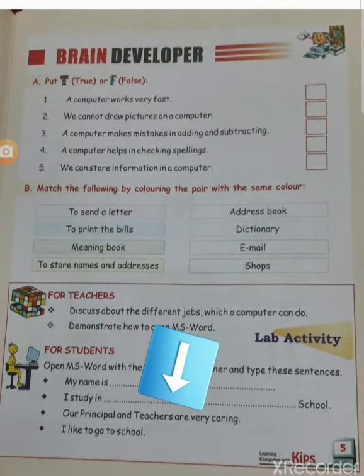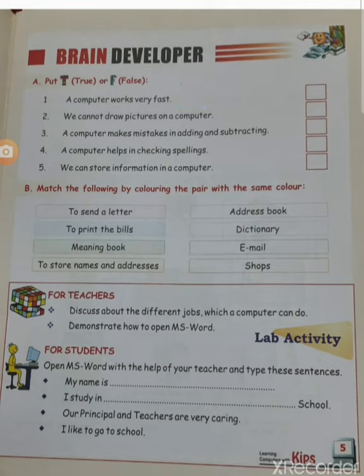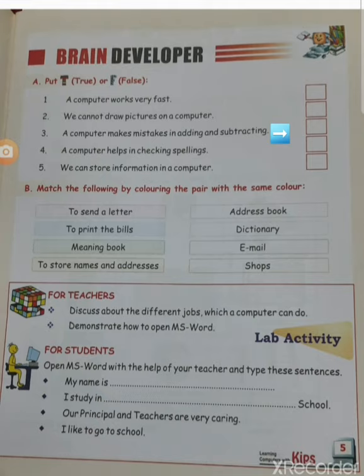Now let's look at a few features and do a true or false activity. A computer works very fast — True. We cannot draw pictures on a computer — False. A computer makes mistakes in adding and subtracting — False, never! A computer never makes mistakes. So the third statement is false.